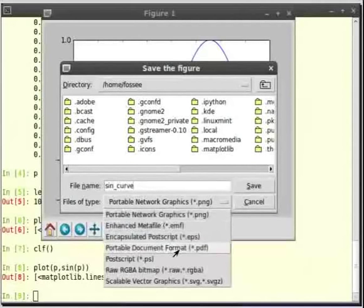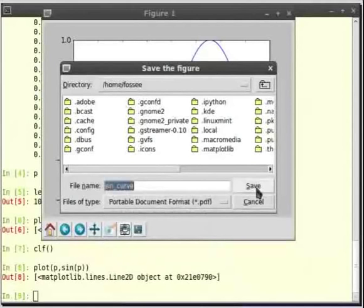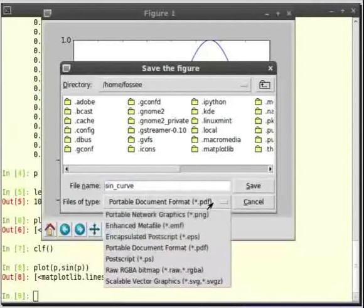We will save the file by the name sine_curve in pdf format. As you can see, we can specify the format of file from the drop down. Formats like png, eps, pdf, ps are available.